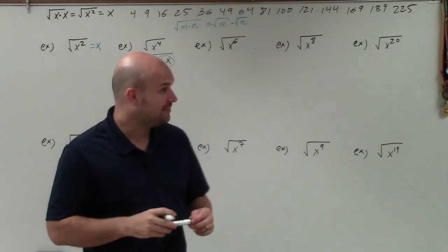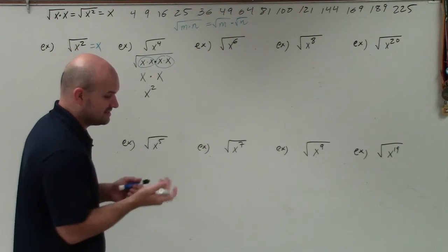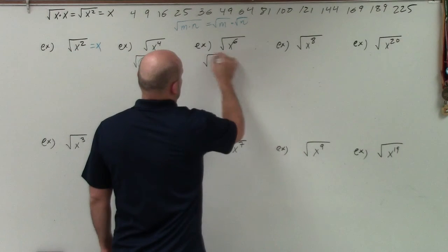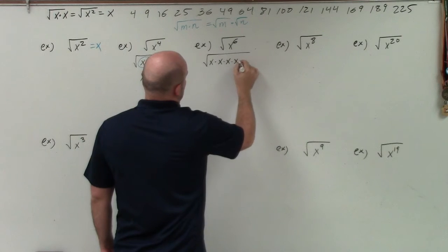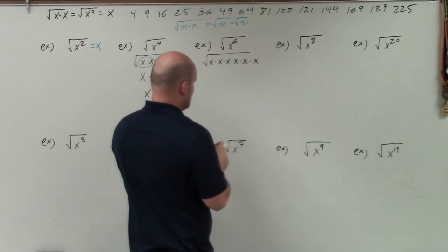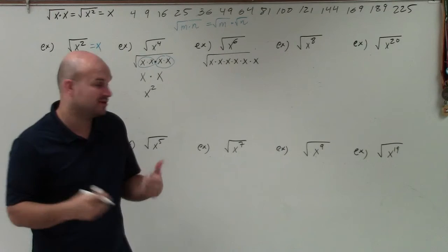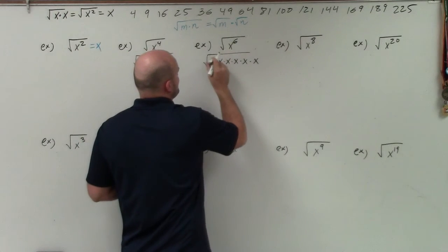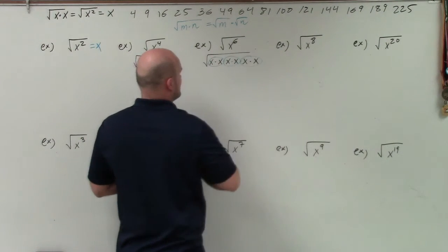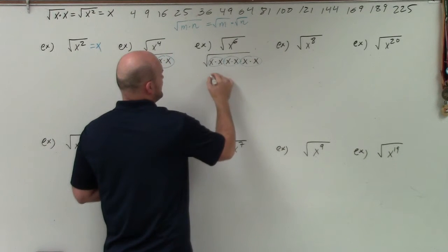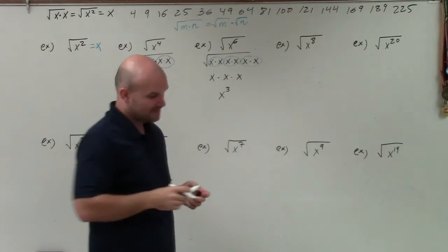In the next example, we use prime factorization for x to the sixth power. So x to the sixth is x times x times x times x times x times x. We group our pairs because we can take the square root of pairs — this pair, this pair, and this pair. Therefore, I'm left with x times x times x, which is x cubed.